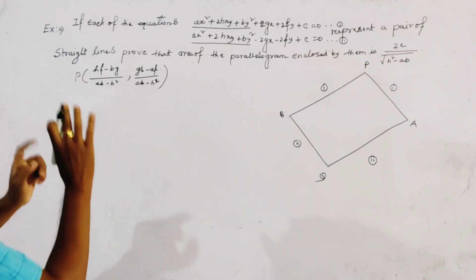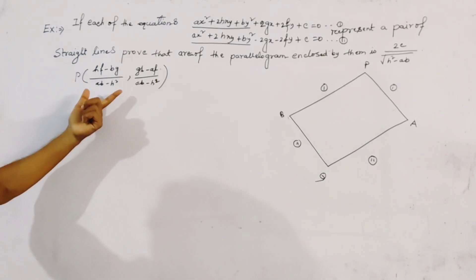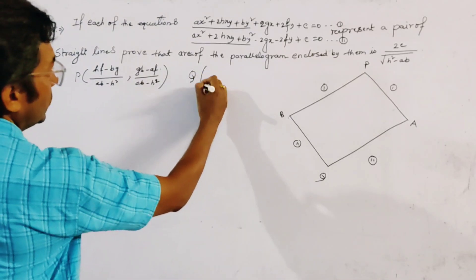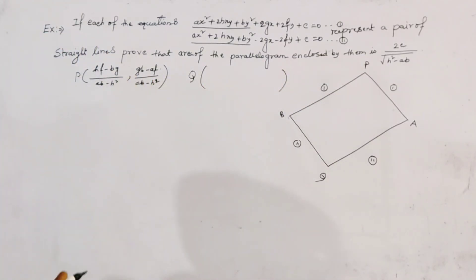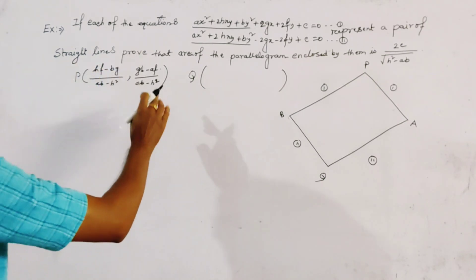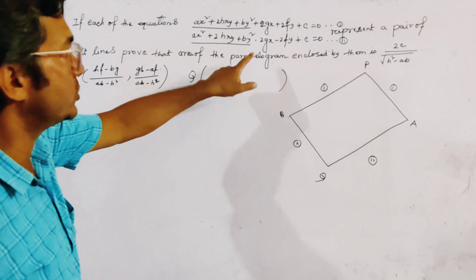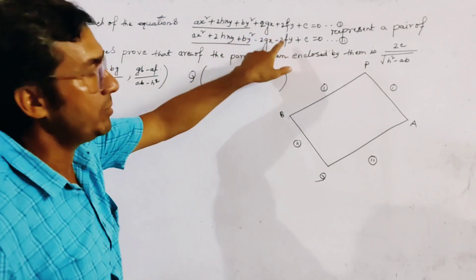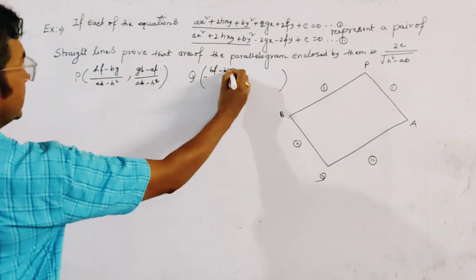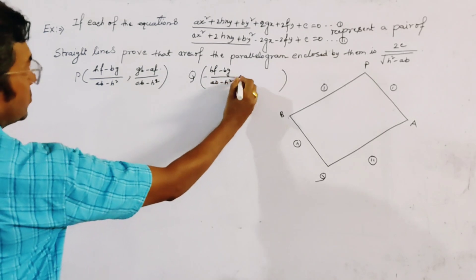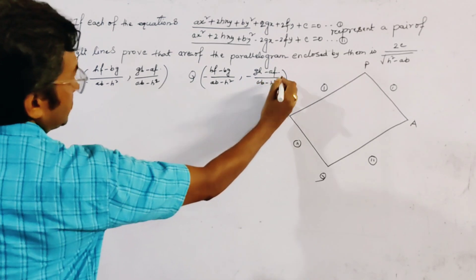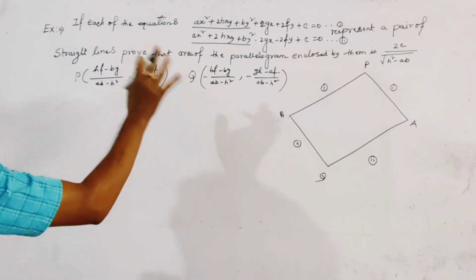We already found this point of intersection in the previous example. Similarly, for the second pair, we only substitute f → -f and g → -g. So the point of intersection Q is given by Q = (-(hf - bg)/(ab - h²), -(gh - af)/(ab - h²)).